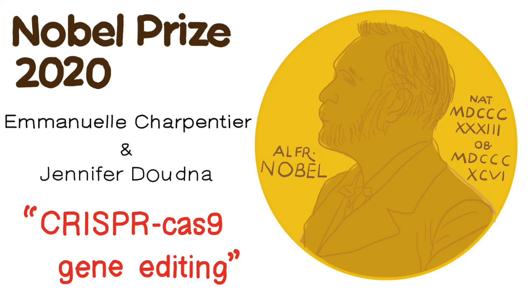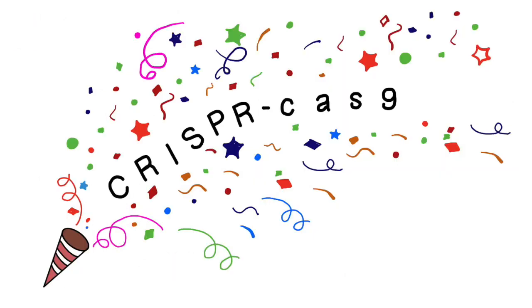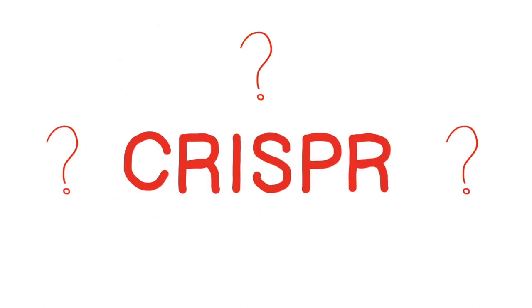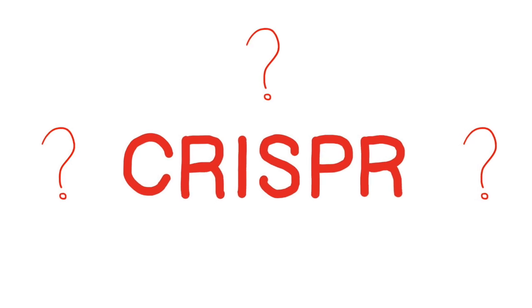In 2020, Emmanuelle Charpentier and Jennifer Doudna were announced as the winners of the Nobel Prize in Chemistry for their work in CRISPR-Cas9 gene editing. When the news broke out, there was lots of excitement about the potential and prospects of working with CRISPR. So what exactly is CRISPR and where did it come from?